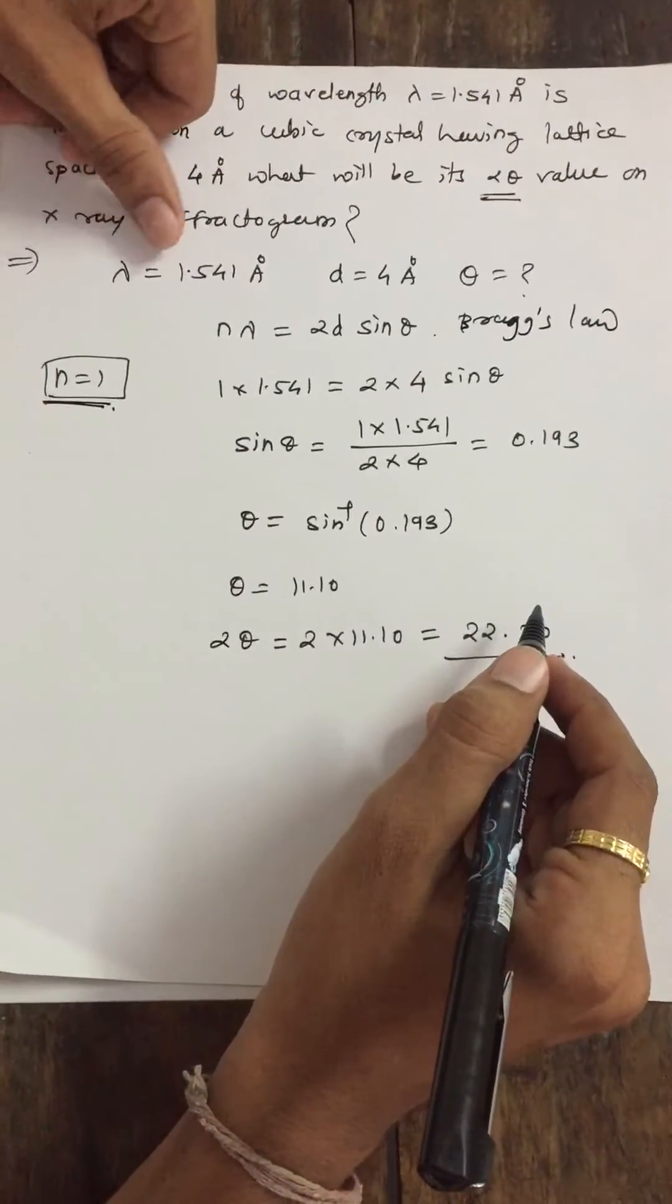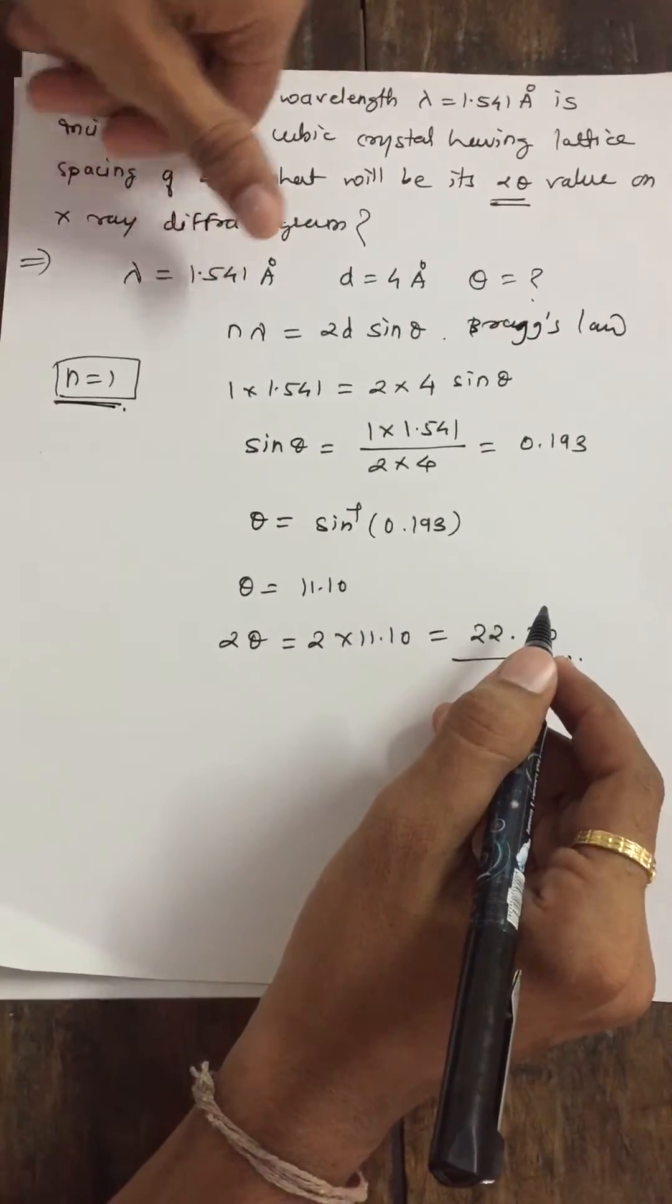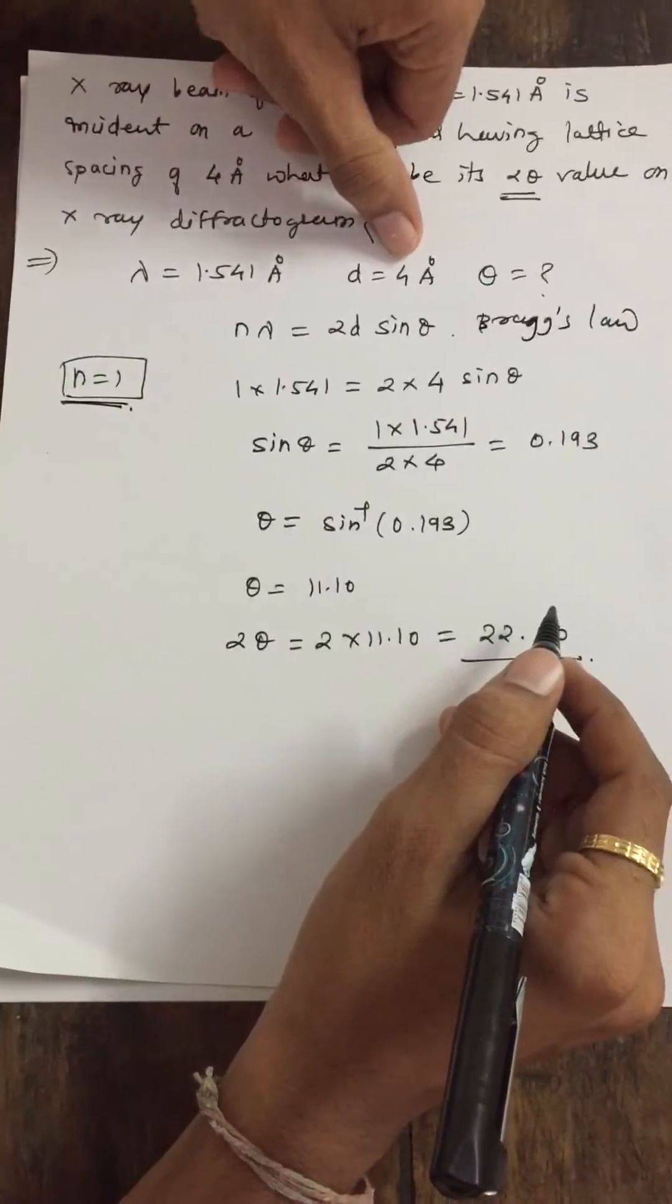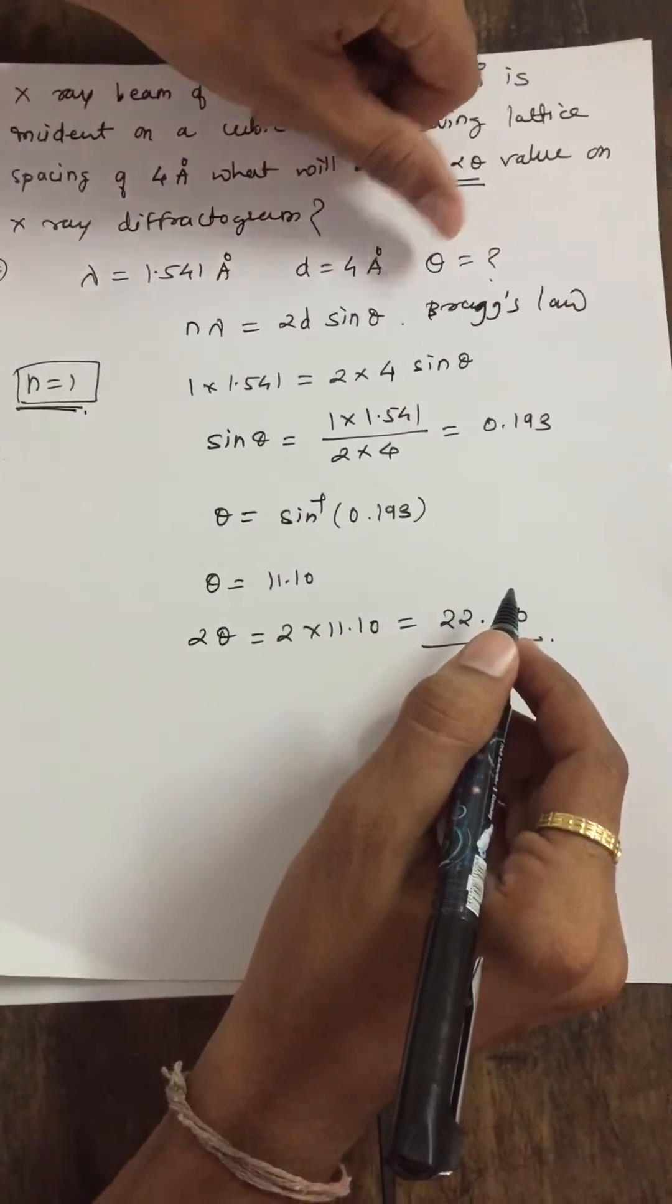We have given lambda which is 1.541 Angstrom, d is spacing which is 4 Angstrom, and theta that we have to calculate.